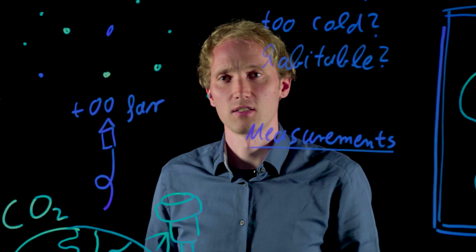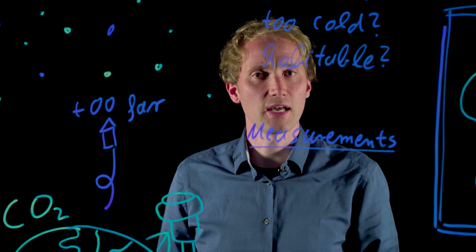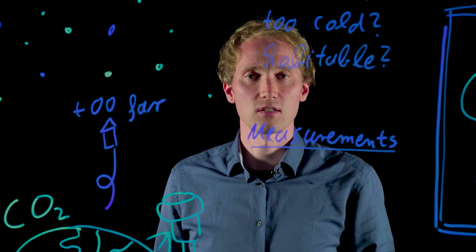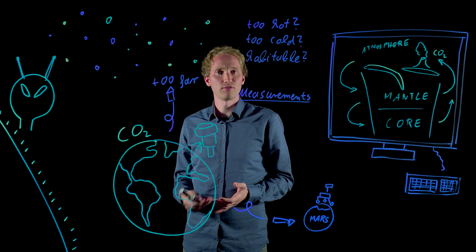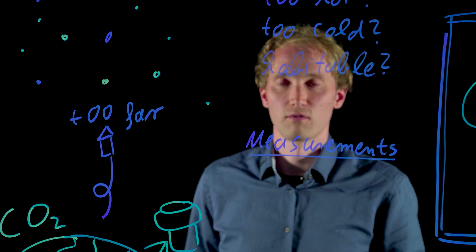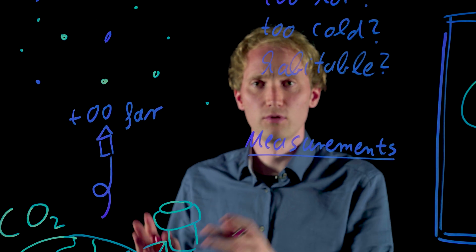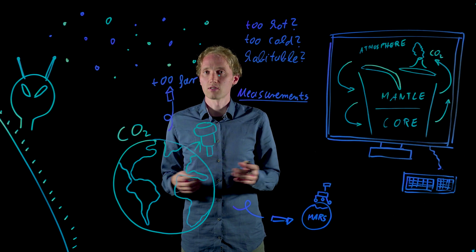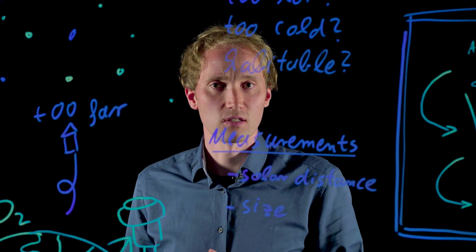Although we cannot directly observe most of the exoplanets with current telescopes, we can still derive some information about the planet by looking at their host star. For example, when a planet moves in front of the star, the star changes its brightness, which gives us an idea about the size of the planet and also about the distance to the star. Or movements of the star caused by the gravity of the planet tells us the mass of the planet.